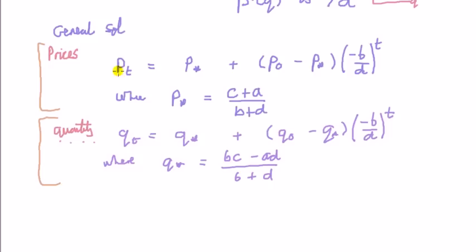Let's focus on the price. Somehow we want pt to eventually reach p star over time. So we have to look at the term. There's two terms here, this plus second term.